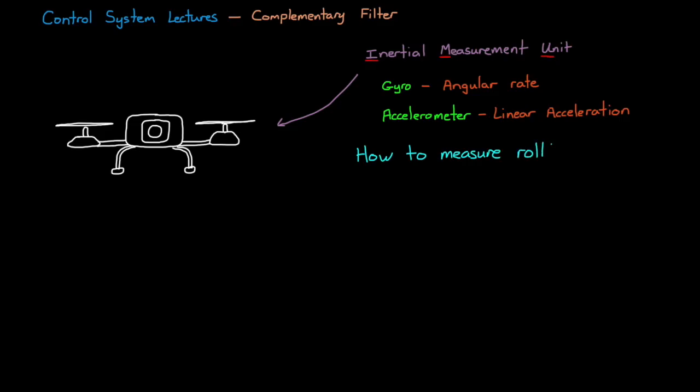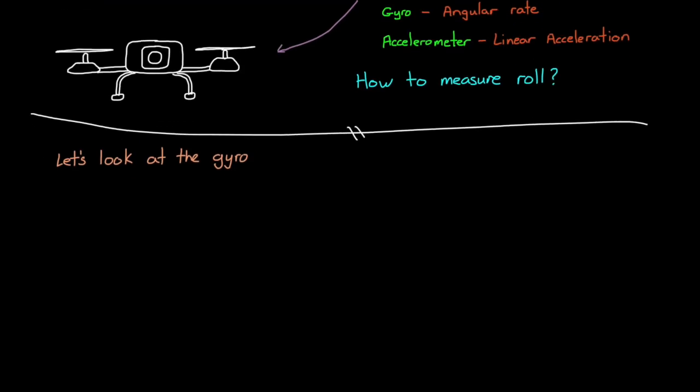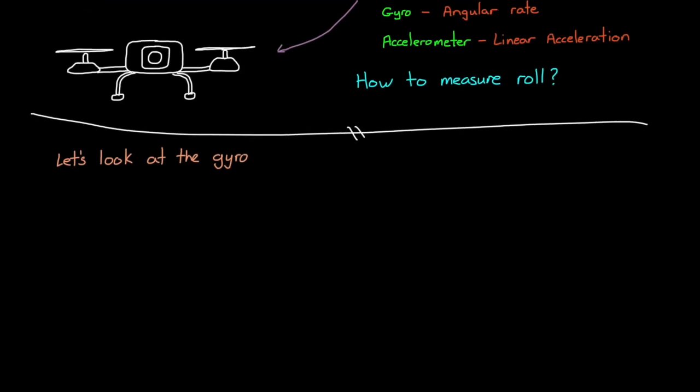So the question is, how can we measure the roll angle with the IMU? Now neither of these sensors can measure the roll angle directly, however we can use either of them to estimate the roll angle. Let's look at how we would do that using just the gyro measurements. If we assume that the roll angle is zero degrees when the drone is sitting on the ground, then after it takes off we can use the measured roll rates to calculate how the roll angle changes over time.